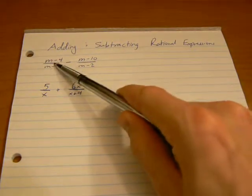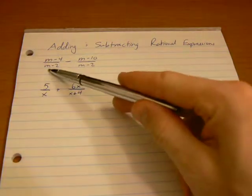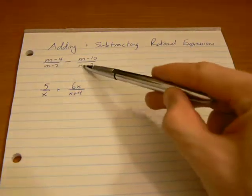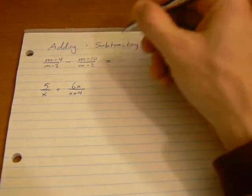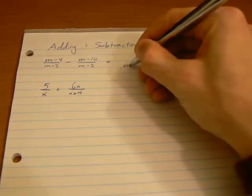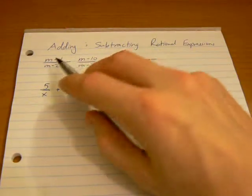Question: m-4 over m-2 subtracting m-10 over m-2. Even though these are both binomials, we have common denominators so we can treat this just like a regular addition or subtraction problem here.